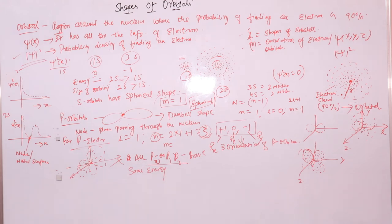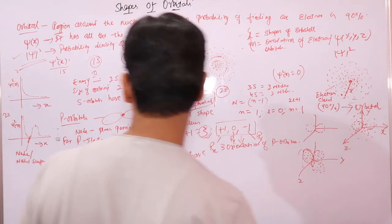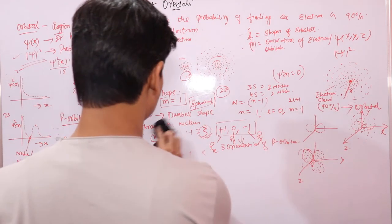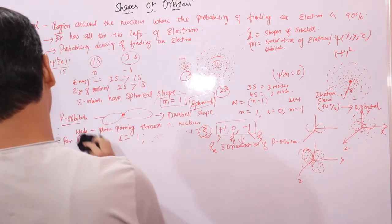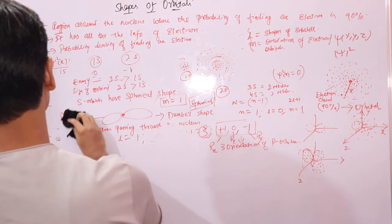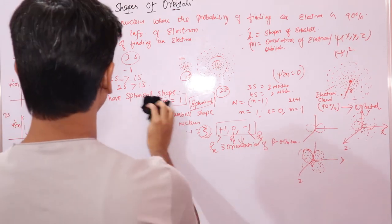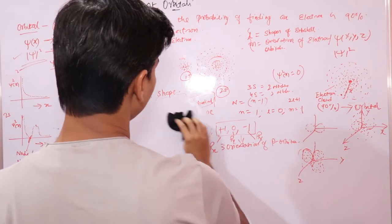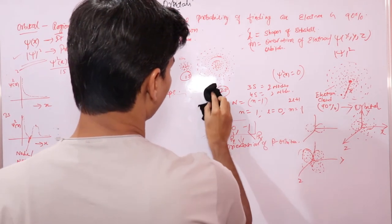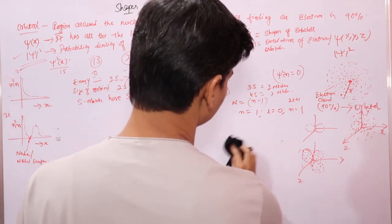Now let's talk about D orbitals. We know that there are five D orbitals, meaning five different orientations in space.